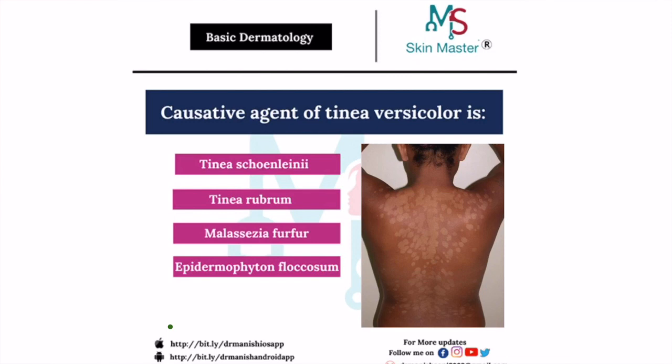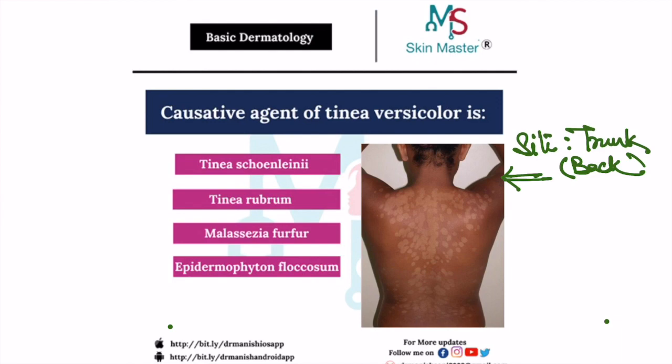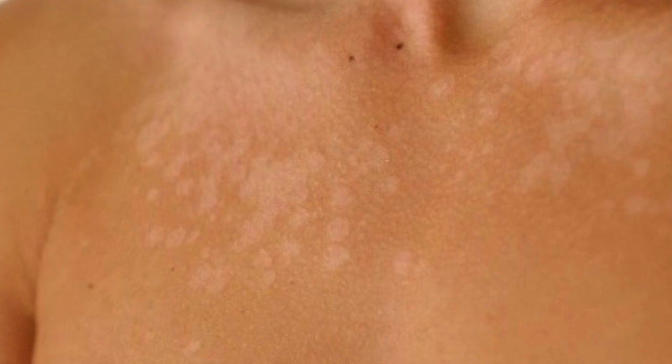Hello students, yesterday I showed you one image in which the back of a patient was shown having multiple hypopigmented lesions. As you can see, the site is the trunk — the back of the patient — and over the back there are macules. Macules are small flat lesions and they are light in color, hypopigmented. Do you know of any condition where hypopigmented macules are seen over the back?